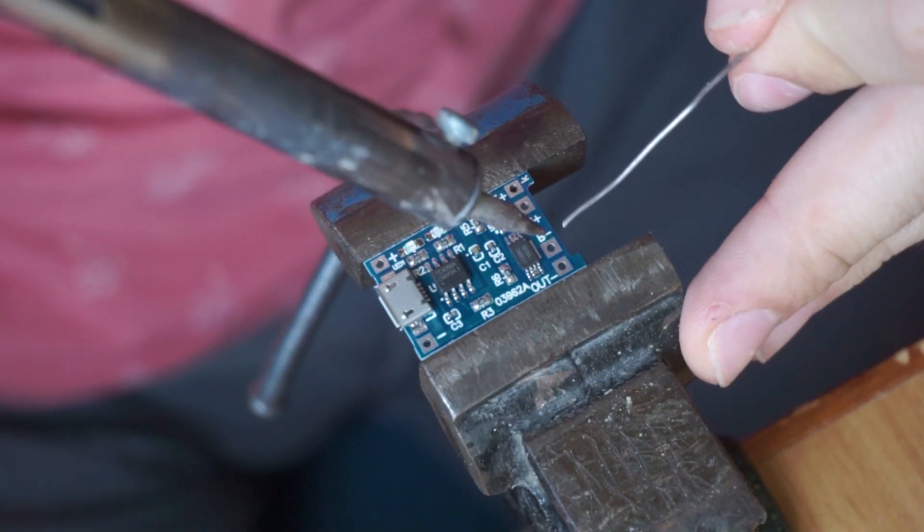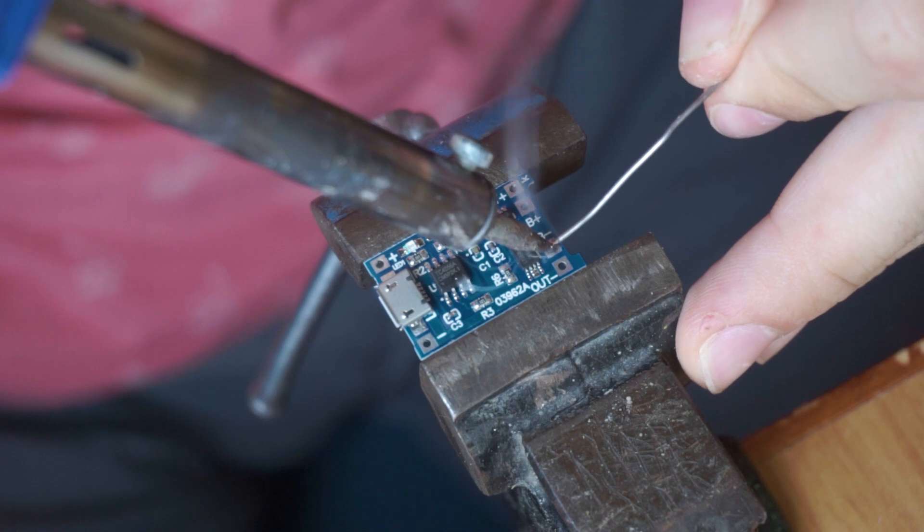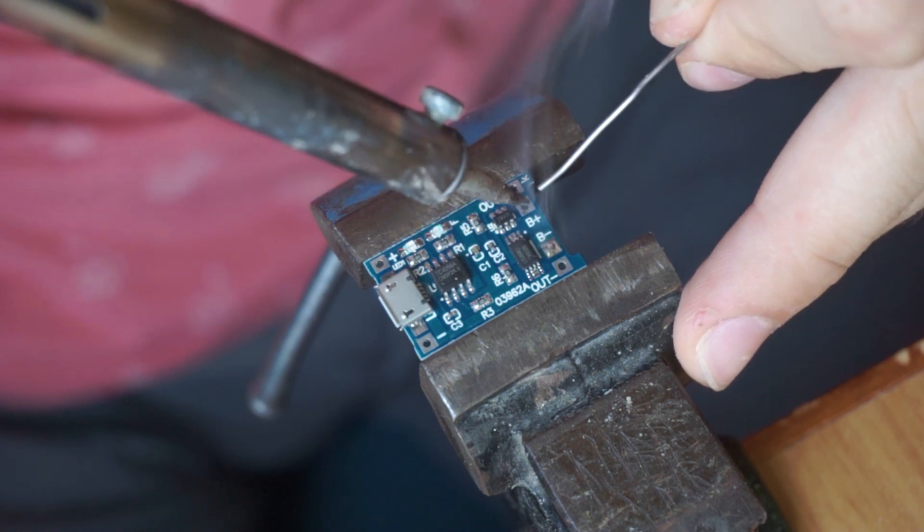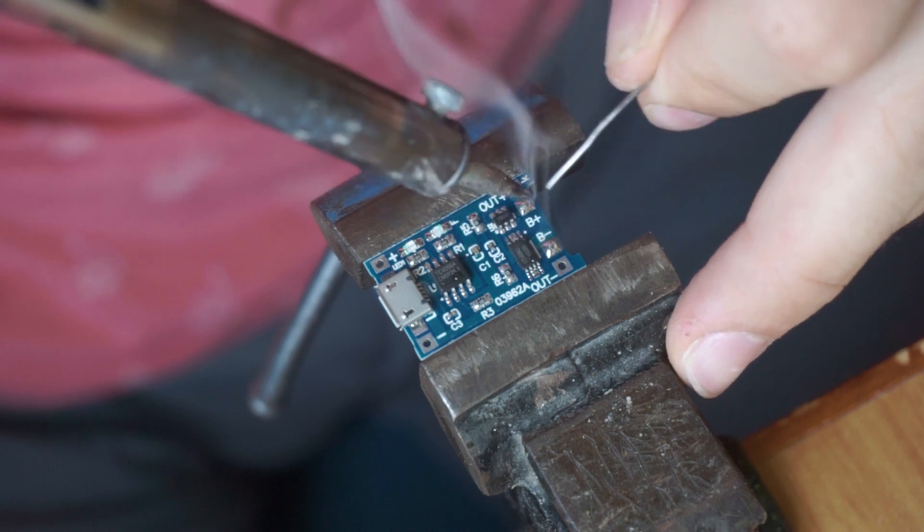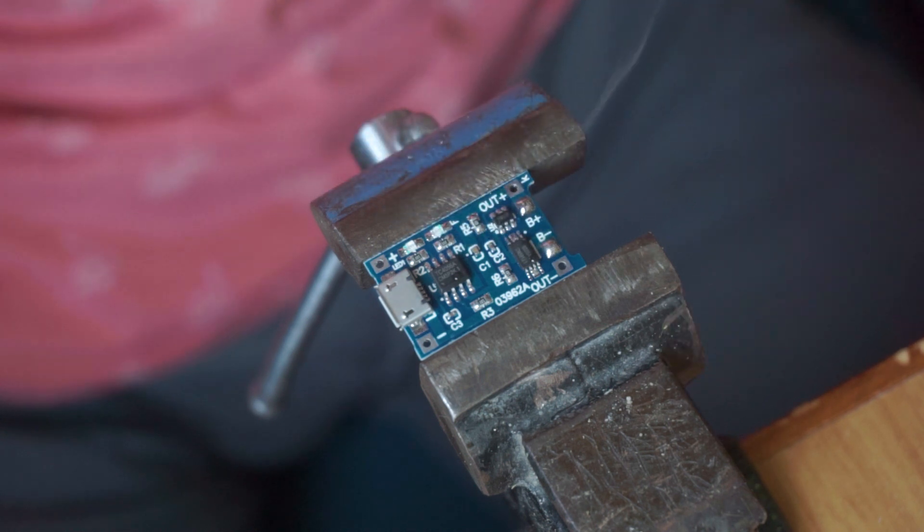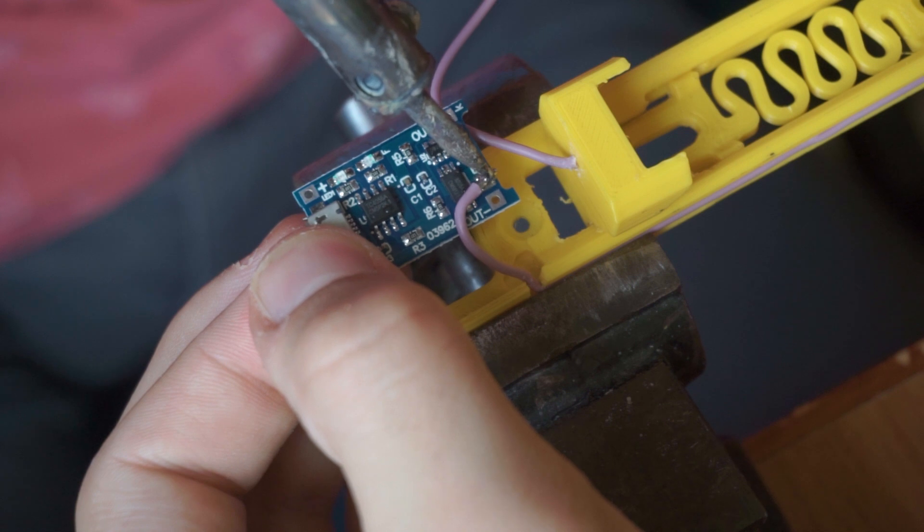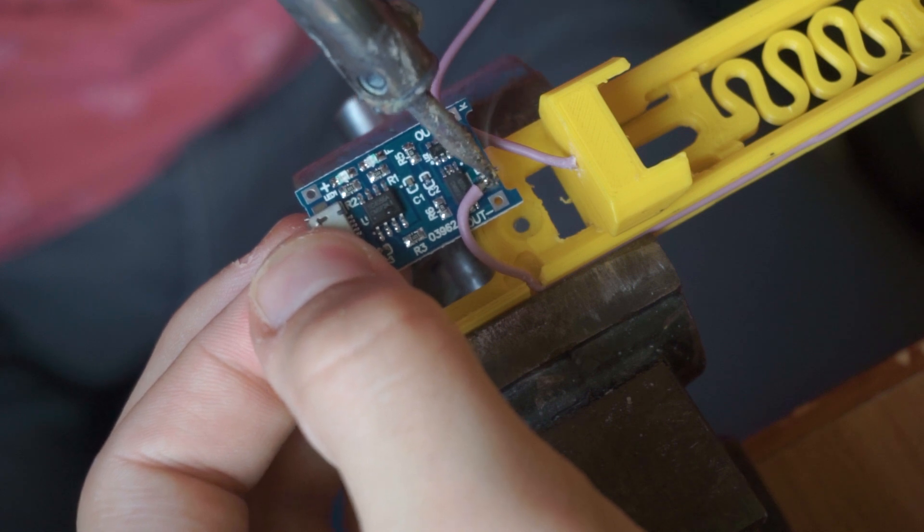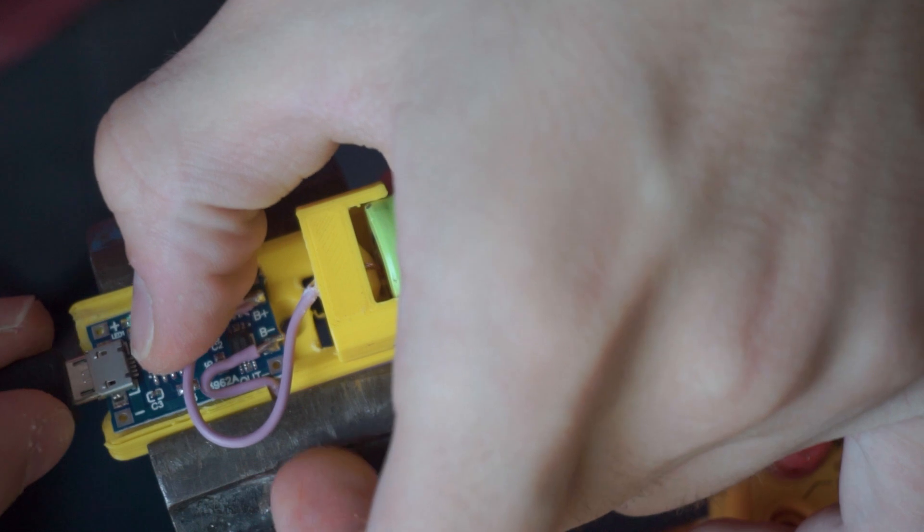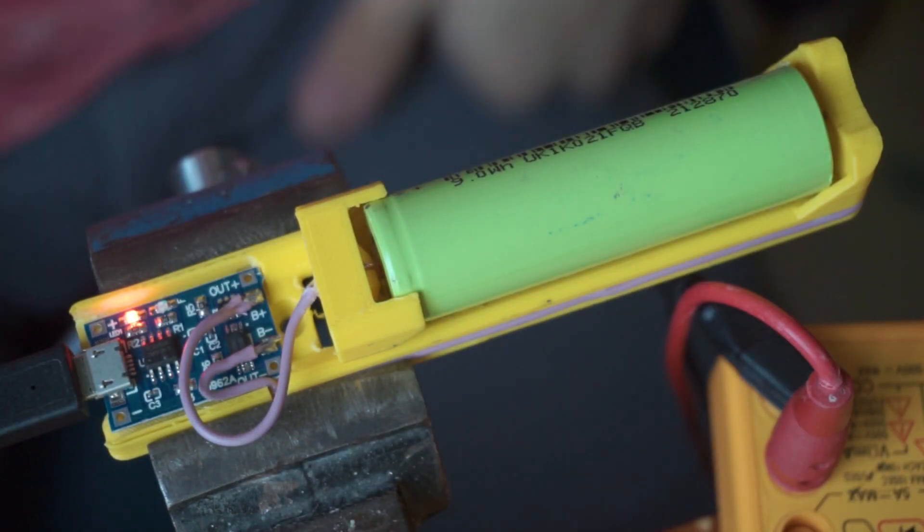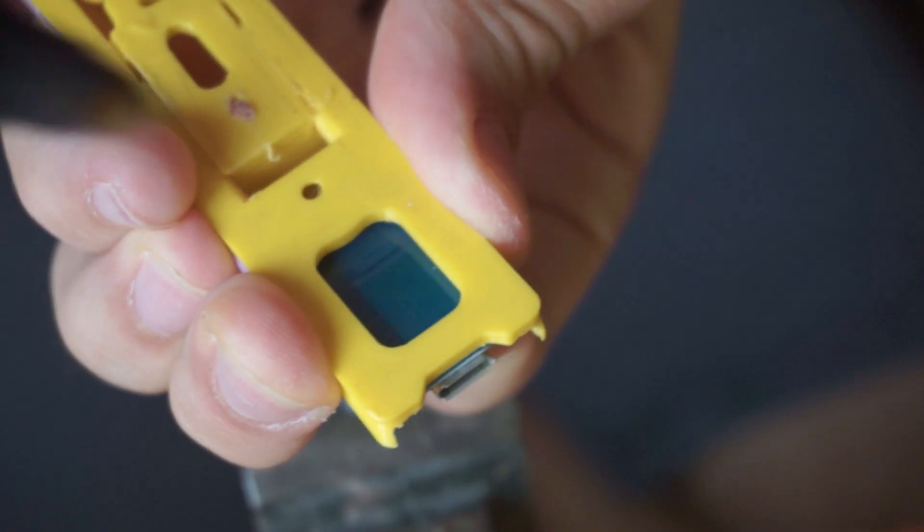There are only two electrical connections to make: battery positive and battery negative. The module with the TP4065 IC also offers battery protection by passing the load through another IC inside, but for this project we only need the charging function. Just connect the positive to pin B+ and the negative to pin B- by soldering the wires to the board, and it's finished.